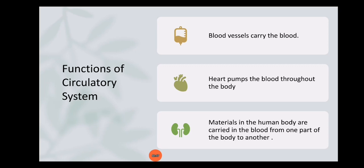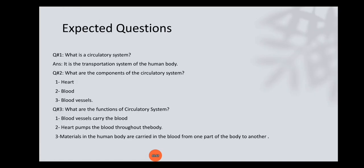Here are some expected questions. Question number one: What is the circulatory system? It is a transportation system of the human body. Question number two: What are the components of the circulatory system? Number one — heart, number two — blood, and number three — blood vessels. Question number three: What are the functions of the circulatory system? Blood vessels carry the blood, the heart pumps blood throughout the body, and materials are carried in blood from one part of the body to another.